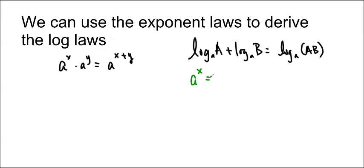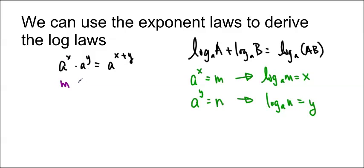Okay, so the first thing we're going to do is actually define a to the x and a to the y as m and n. And then we're going to put it in logarithmic form. So log base a of m is equal to x and log base a of n is equal to y. Now we're going to use those and substitute them in. So a to the x is m and a to the y is n. And this one we can't do anything with yet, so don't get all sneaky.